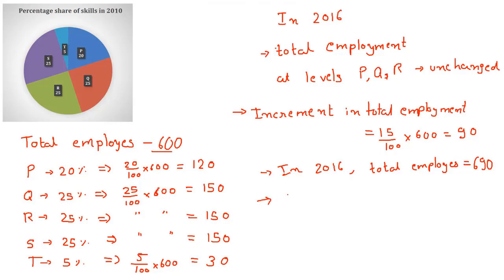It is also given that the employment at skill level S increased by 40% from 2010. That means in 2010, 150 employees were there, and in 2016, the increment was 40% of 150. So the increment in S was 40% of 150, which is equal to 60. So out of the newly added 90 employees, 60 of them were employed at skill level S.